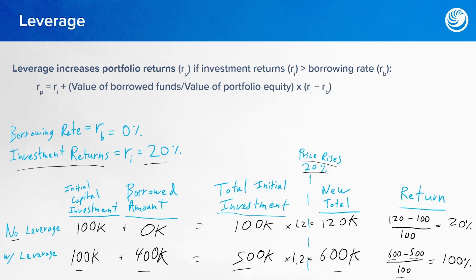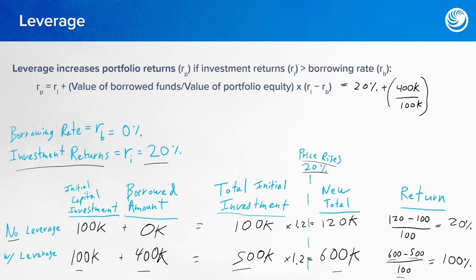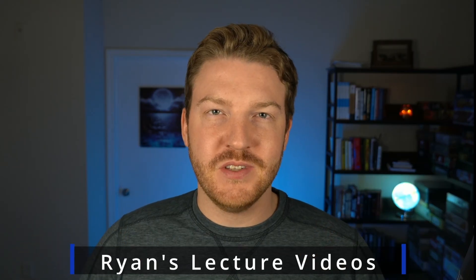Now we can jump to the official formula from the CFA Institute textbook for the portfolio's return. It equals the investment return — 20% — plus the value of borrowed funds divided by the value of portfolio equity, multiplied by the investment return minus the borrowing rate. The value of borrowed funds is $400K and the value of portfolio equity is $100K. The investment return is 20% and the borrowing rate is 0%. Working through the algebra gives us 100%, which matches the leveraged calculation we just did.